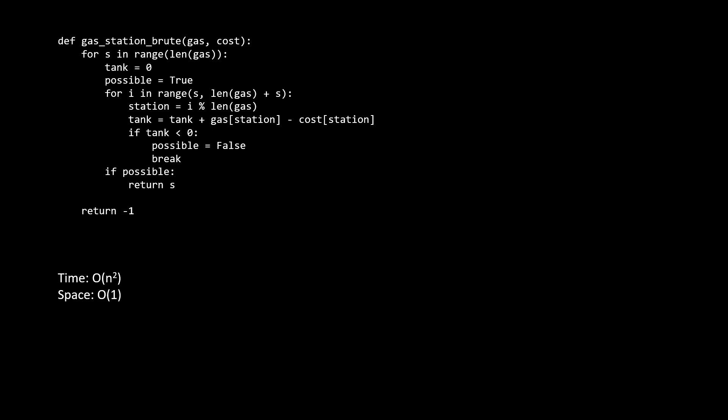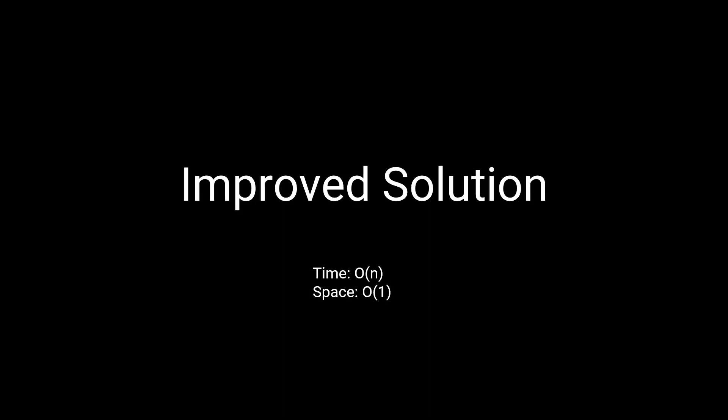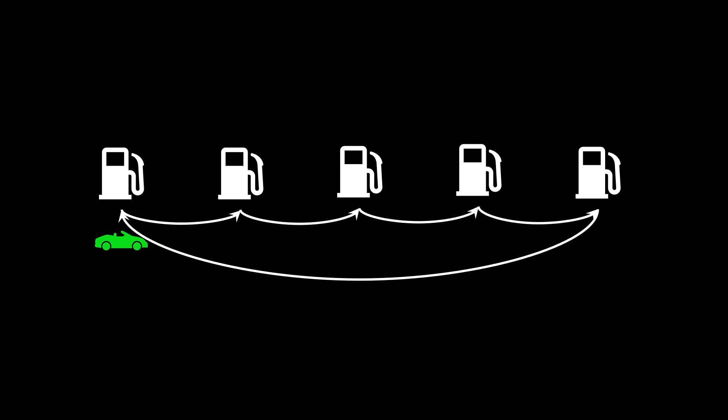Alright, now that we have discussed this brute force solution, let's move on to the improved solution, which runs in O of N time. As always, in order to improve our solution, let's look back at our brute force solution and see where it's wasting time or where it could be learning something. So when our brute force solution ran a simulation, as soon as the gas tank became negative, it stopped and moved on to try the next station as a starting point. But this is inefficient, and in order for us to understand why, we have to look at what makes the car stop.